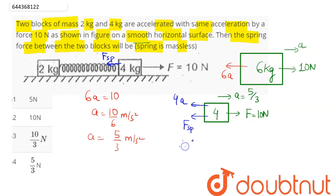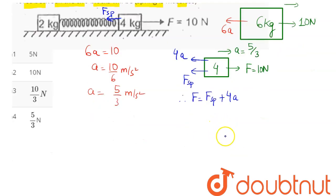Hence F balances spring force plus the pseudo force which is 4A. So we have F as 10N, spring force we need to calculate, and acceleration is 5 by 3, and spring force comes here as 10 minus 20 by 3 that is equal to 10 by 3 N.